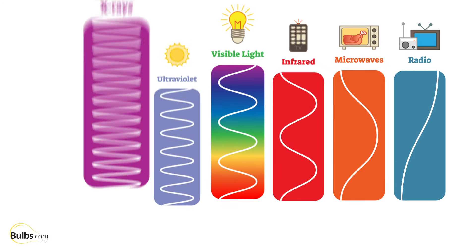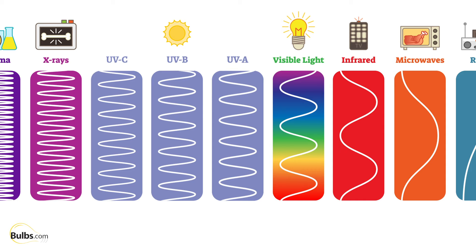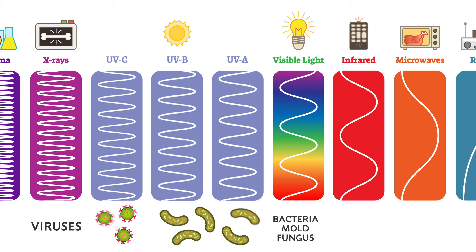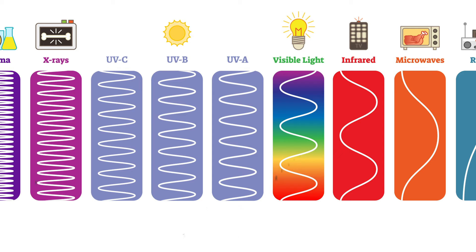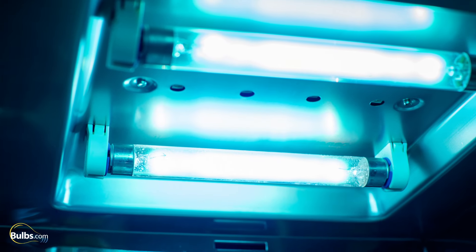Looking at the electromagnetic spectrum again and breaking out the three UV types, UVA and UVB can be used to kill bacteria, mold, and fungus. But what separates UVC apart is its ability to also kill viruses. UVC is the point where the wavelengths become short enough to disrupt the virus. UVC light is an excellent and powerful tool for disinfecting and killing bacteria and viruses.